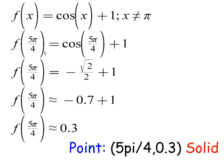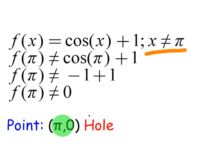Okay, so now let's choose points that are bigger than π. So let's start with 5π over 4. Cosine of 5π over 4 is negative square root of 2 over 2 because it's in the third quadrant. Negative 0.7 plus 1 is 0.3, so that's going to be a solid point because it's part of this interval. X is, 5π over 4 is not equal to π. The only point that's not going to be solid is that π, which we just looked at. It's going to be a hole.